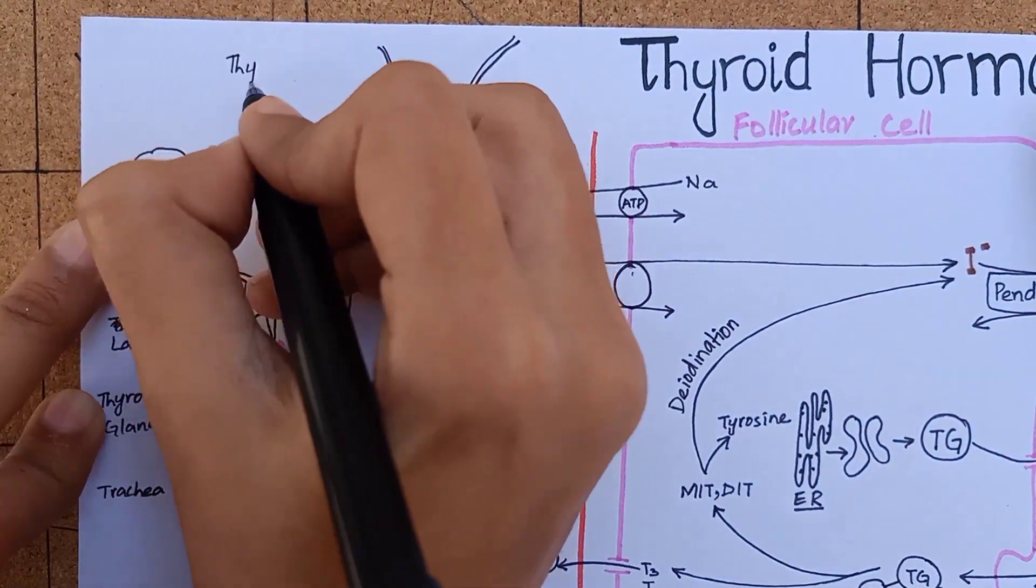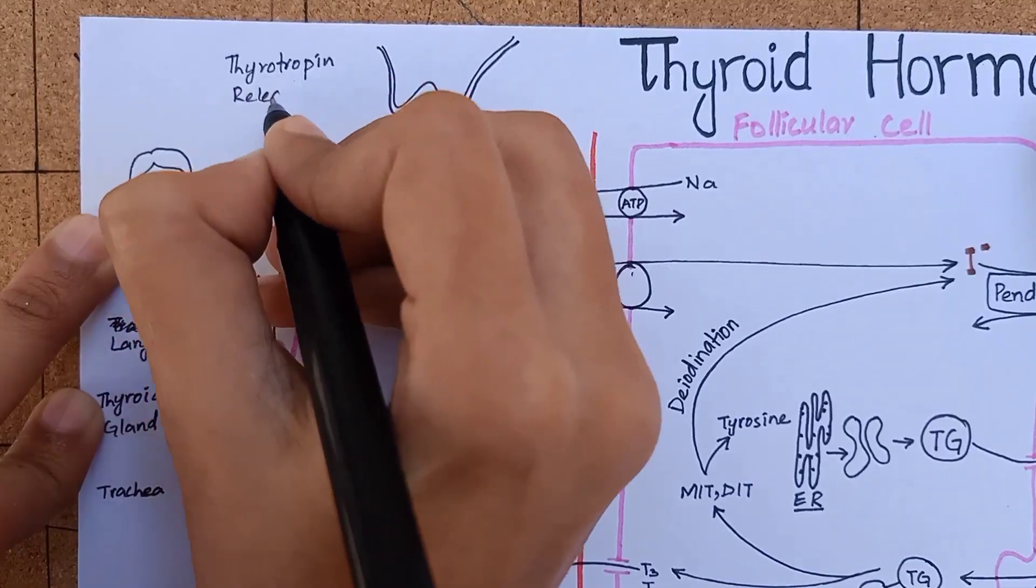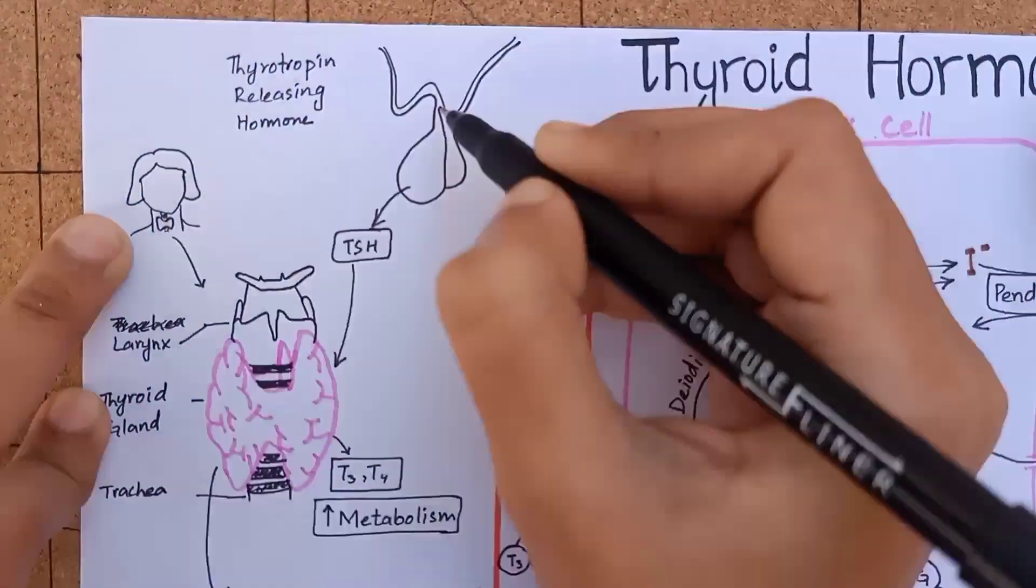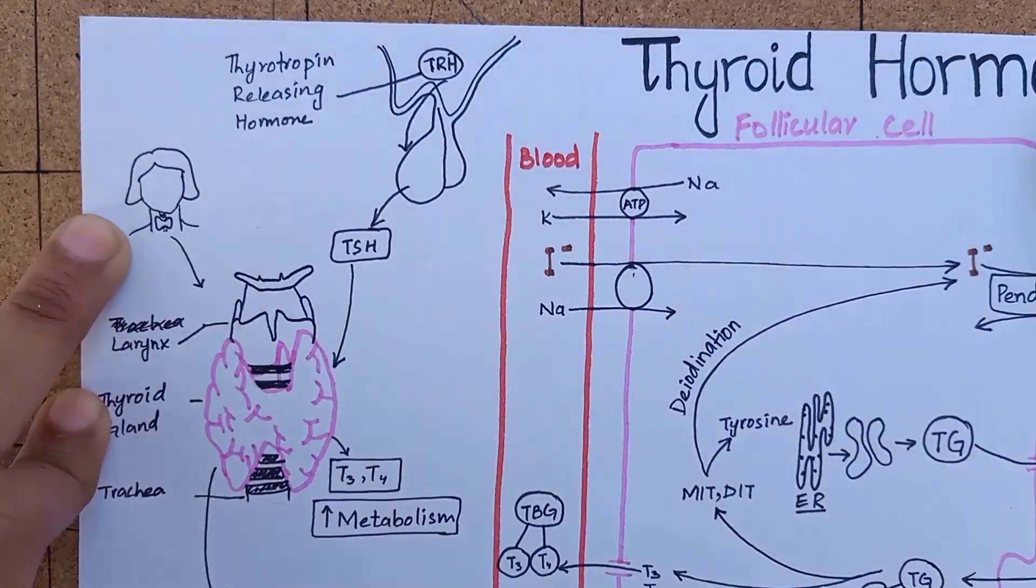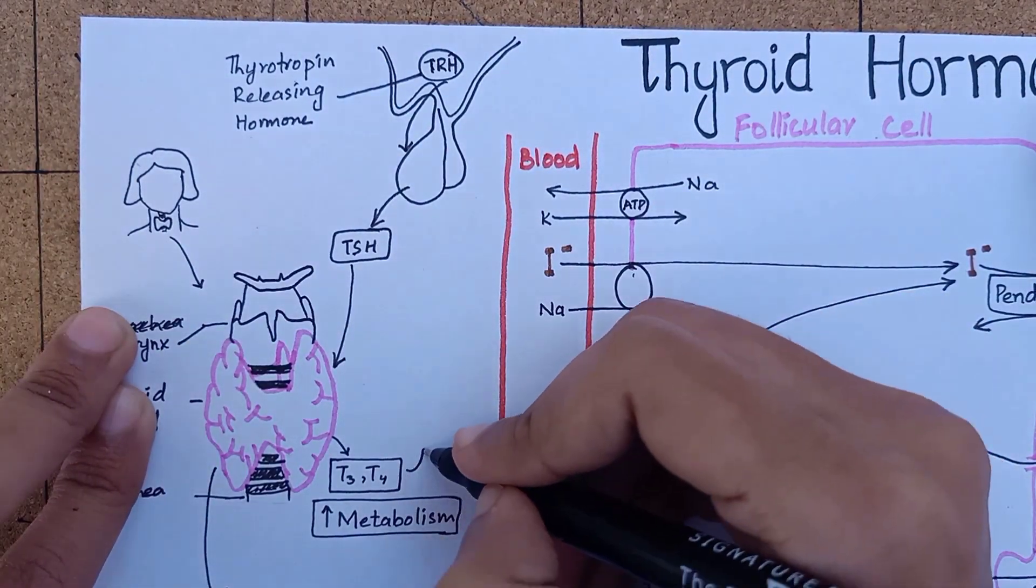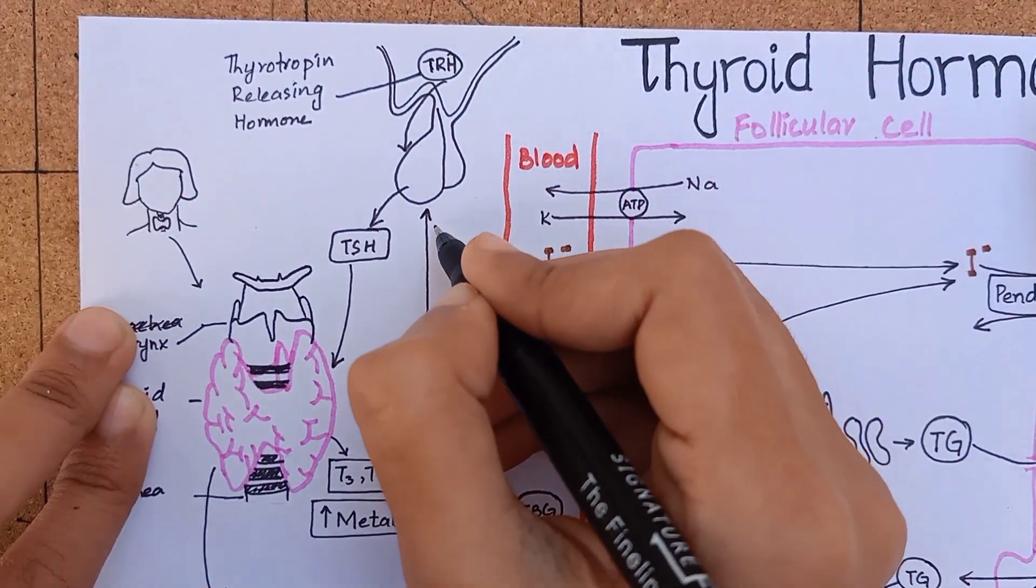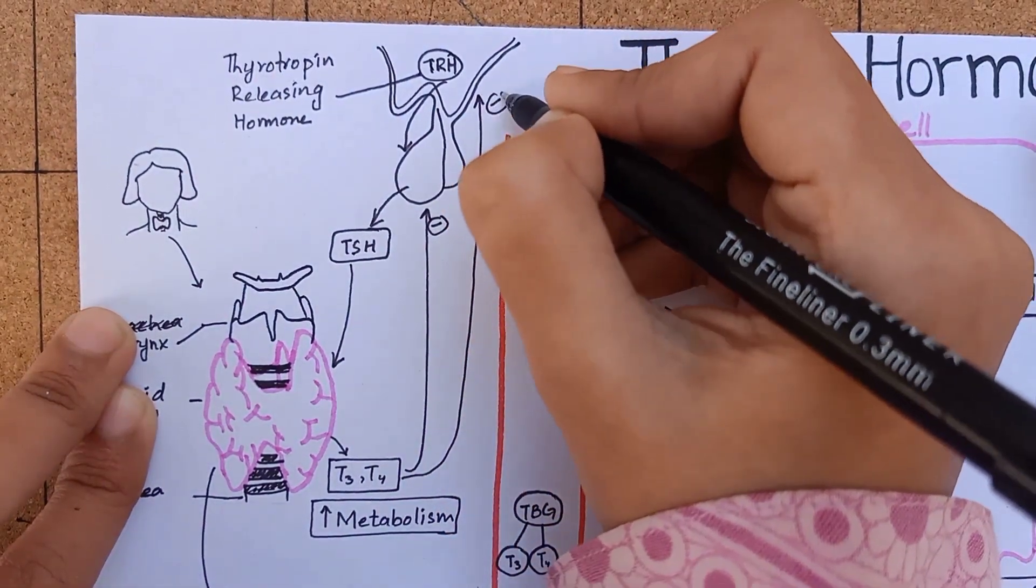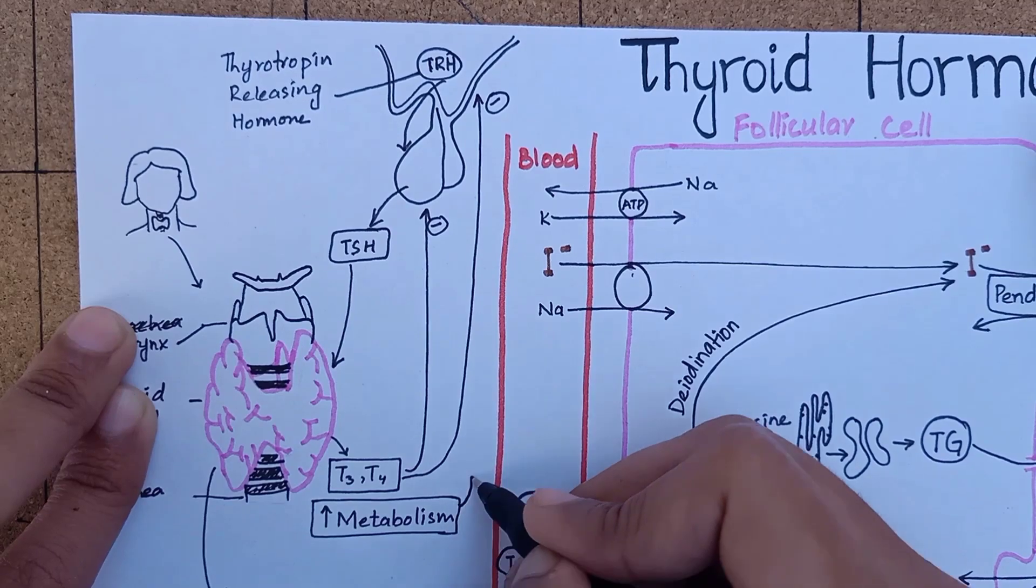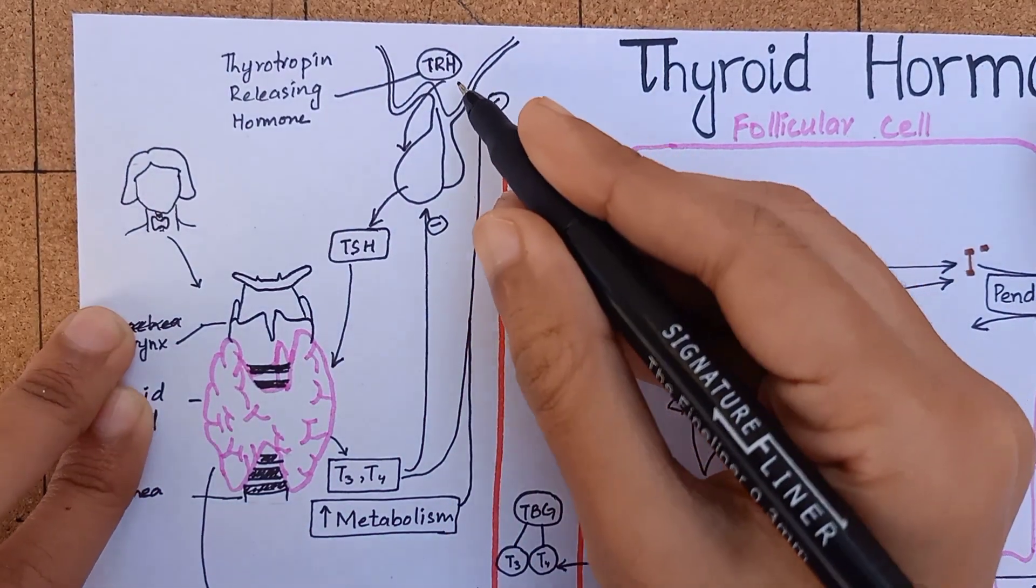The secretion of TSH is controlled by a hypothalamic hormone, thyrotropin-releasing factor. Increased thyroid hormone levels in the body have an inhibitory effect on both anterior pituitary and hypothalamic hormones. Also, increased metabolic activity has the same inhibitory effect on hypothalamus.